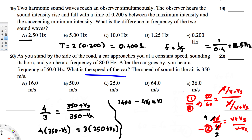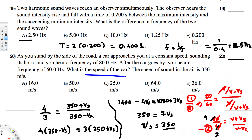Bringing the v_source terms together: 3v_source + 4v_source = 7v_source. Bringing 1050 to the other side: 1400 − 1050 = 350. So 7v_source = 350, therefore v_source = 350 / 7 = 50 meters per second. The velocity of the car is 50 meters per second. That's how we solve these kinds of problems.